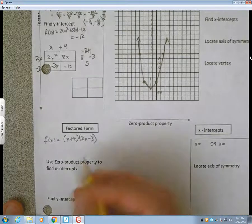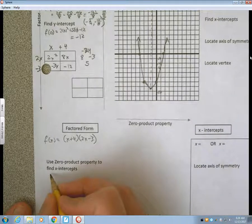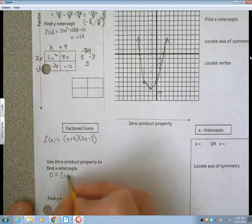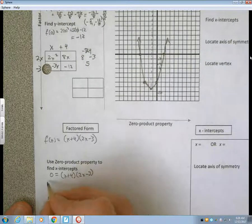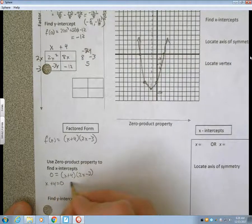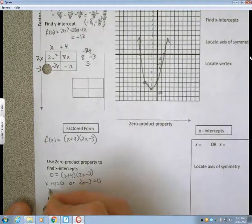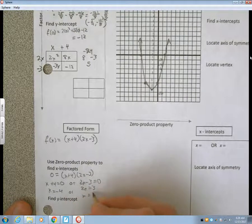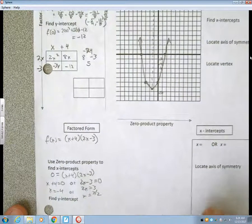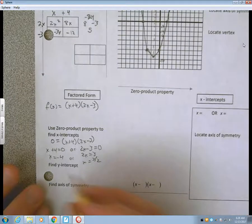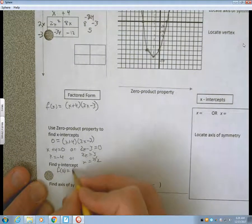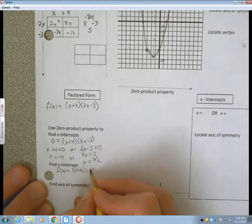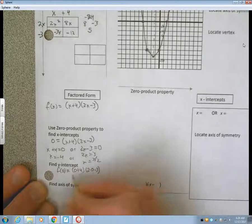If I had the factored form to begin with and I wanted to find the x-intercepts, I would do that by the zero product property. So, let's say 0 is equal to x plus 4 times 2x minus 3, which means that either x plus 4 is equal to 0 or 2x minus 3 is equal to 0. So, x is negative 4 or 2x equals 3 and x is 3 halves, exactly what I had before. So, y-intercepts is always about finding or about plugging 0 in. So, if I plug 0 into my factored form, f of 0, I get 0 plus 4 times 2 times 0 minus 3, which of course is 4 times negative 3. That's negative 12.